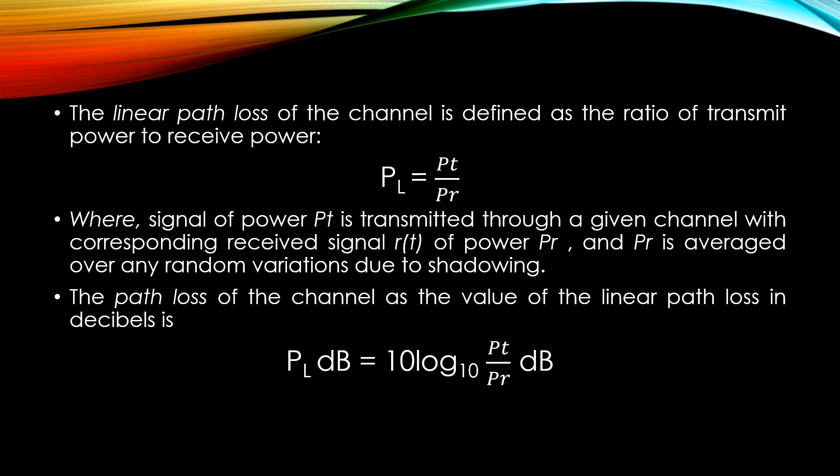In general, dB path loss is a non-negative number and path loss of the channel as the value of the linear path loss in decibels is PLdb equal to 10 log 10 Pt upon PR dB. And therefore, the channel does not contain active elements and thus it can only attenuate the signal. The dB path gain is defined as the negative of the dB path loss, which is generally a negative number.